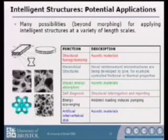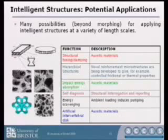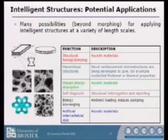Of course, morphing structures offer many possibilities. You could start to use morphing structures within the body itself. People have started to consider, in terms of the medical environment, how you could start to put it into the spine and use the auxetic behaviour of the material. You're also looking at the auxetic behaviour of the material in terms of an impact event and how it will absorb the energy within the structure.